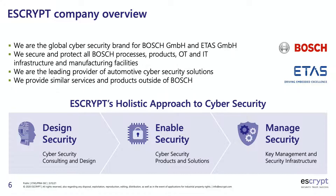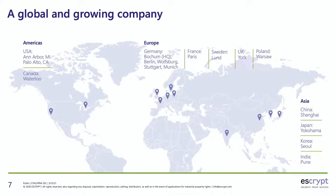We are the global cybersecurity arm for Bosch — we protect and secure all Bosch processes, products, operational technology, and infrastructure. We are the leading provider of cybersecurity and also work with other companies globally. Our headquarters is in Bochum, Germany. We have offices in France, Sweden, UK, Poland, and in Asia — Shanghai, Japan, Korea, and India — with development, sales, and product teams there.